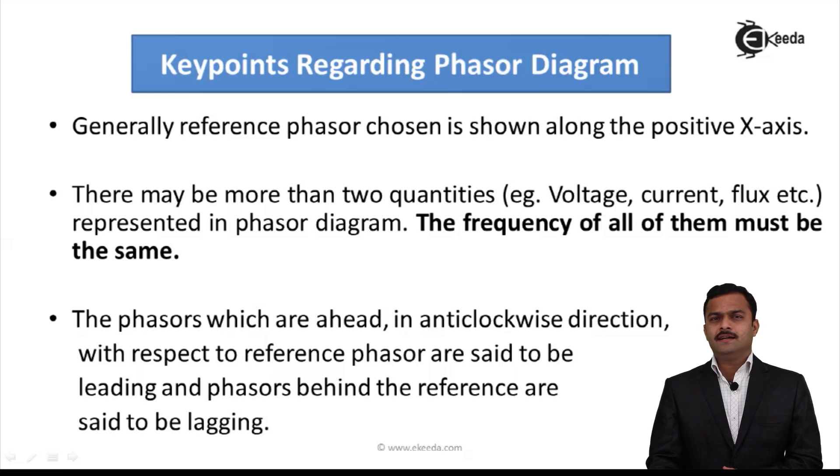Third, the phasors which are ahead in anticlockwise direction with respect to reference phasor are said to be leading and phasors behind the reference are said to be lagging. So in one case, the V was ahead of a reference. So we say V leading. In other case, we have seen the voltage was behind the phasor. So we say voltage lags. So all these are related to each other. If I consider out of the two phasors, one as a reference, obviously, the other phasor either it will be a lagging or it will be leading. When it will be lagging, when that phasor is behind the reference and when it will be leading, when the phasor under consideration is ahead of a reference, then we can say that phasor is leading.